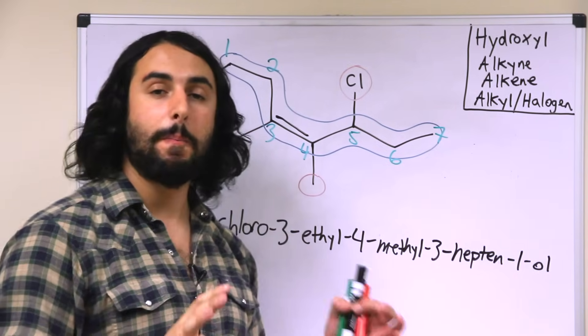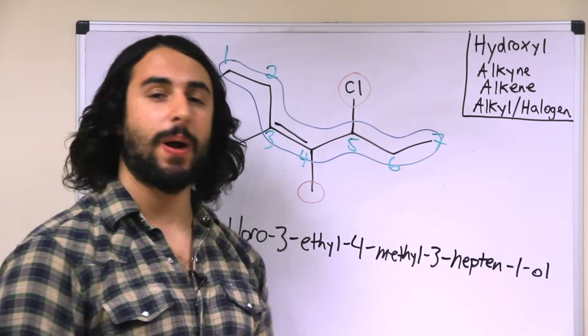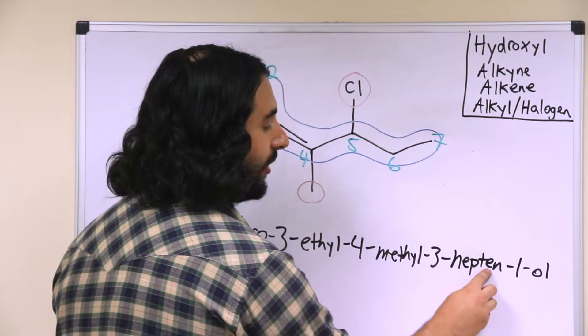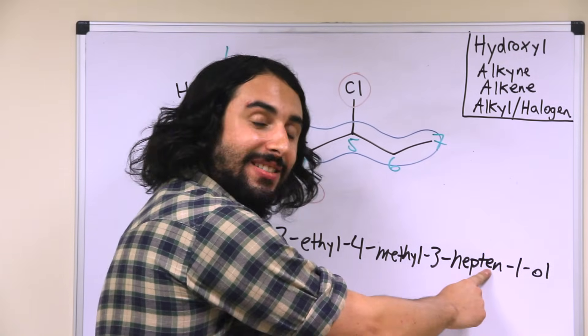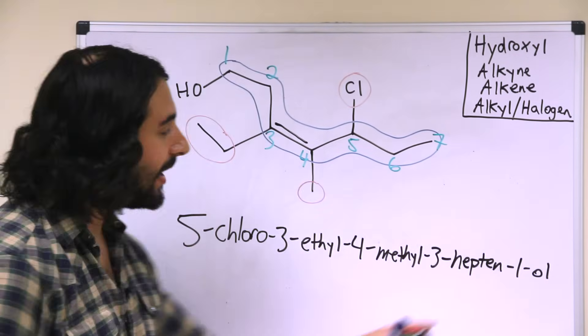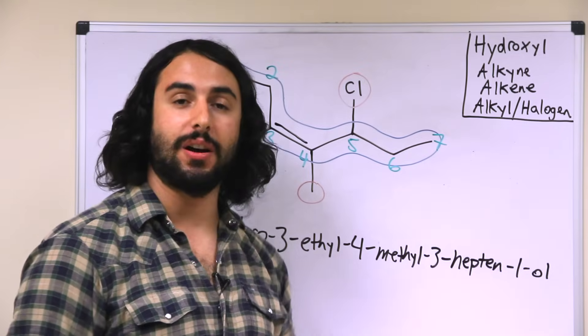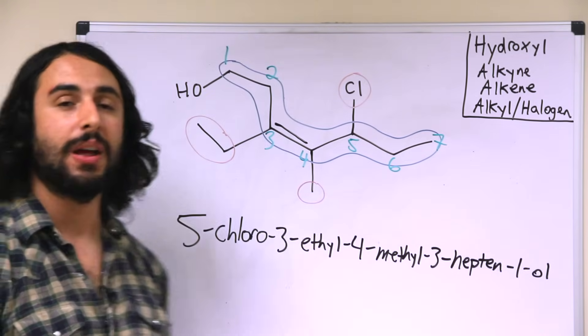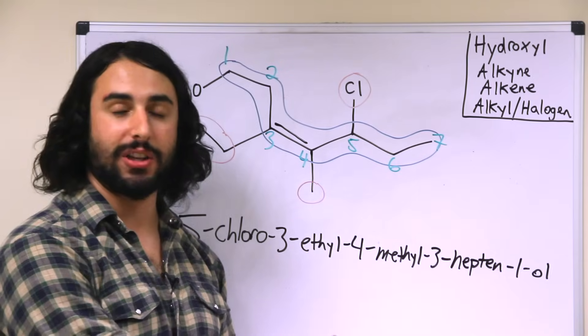So this seems a little bit strange, but it has to be done this way because this e is very important because it is indicative of a double bond, and the ol is important because it is indicative of the hydroxyl group. But both of those are suffixes at the end of the molecule, so they both have to be there.